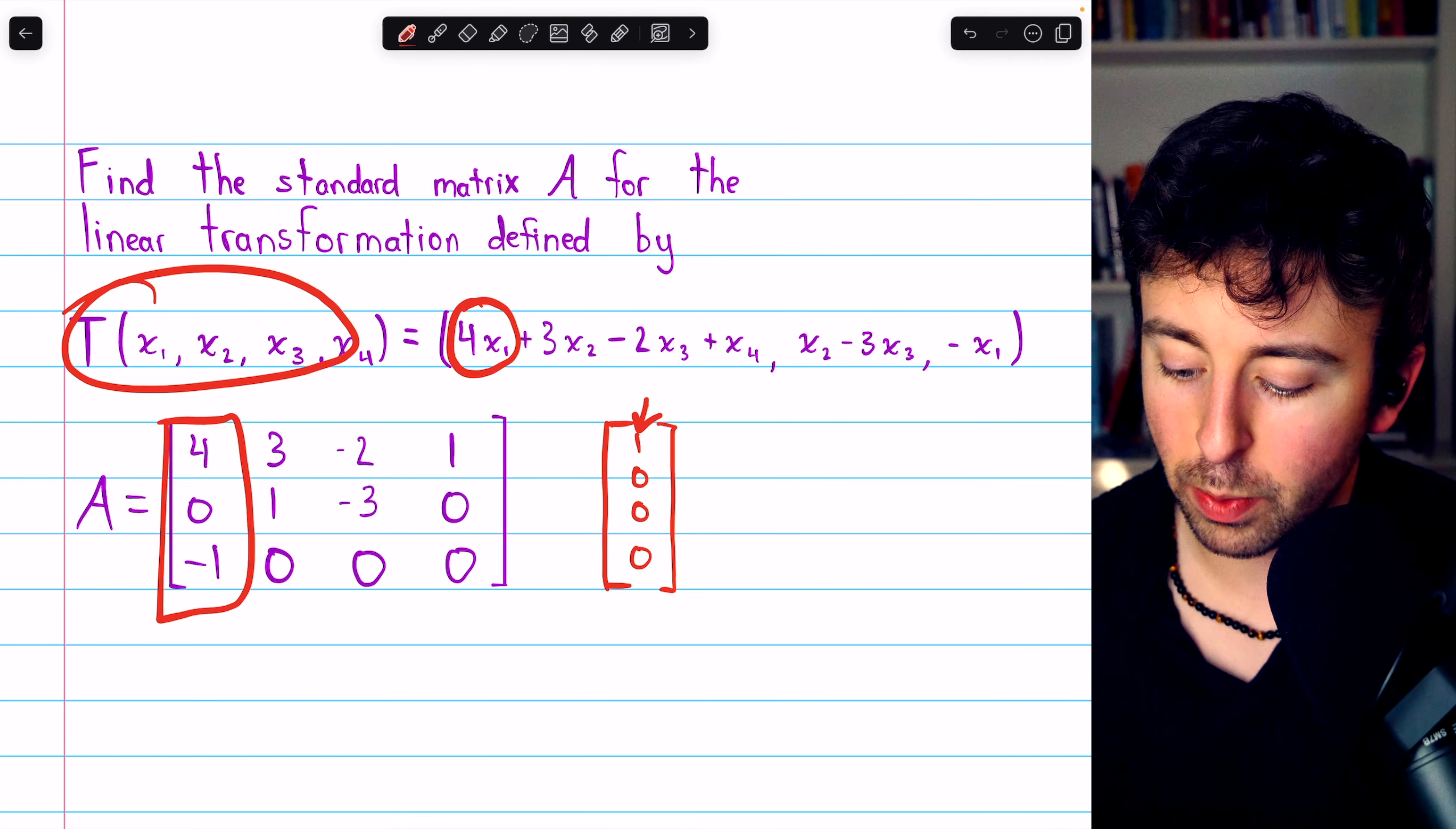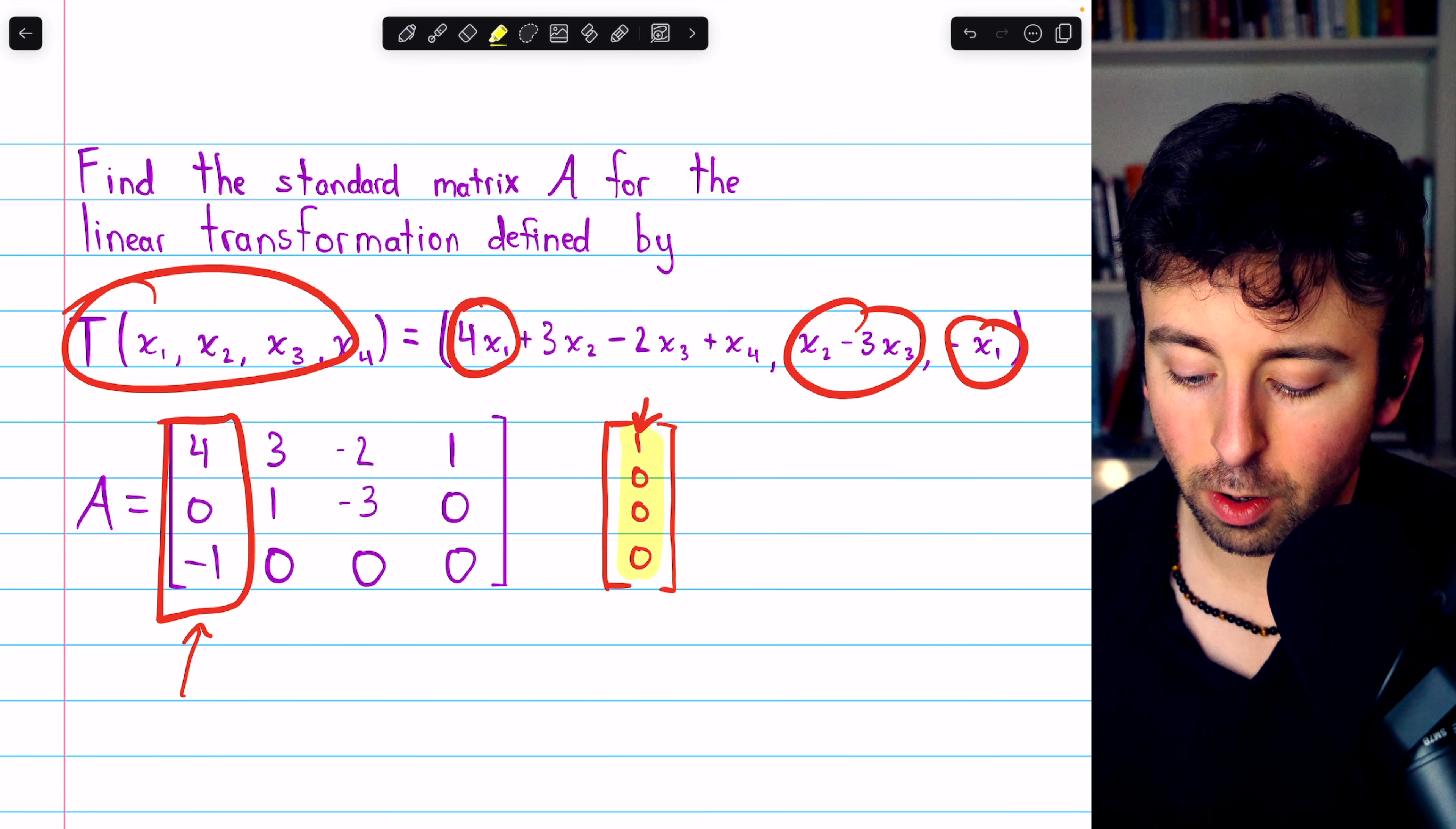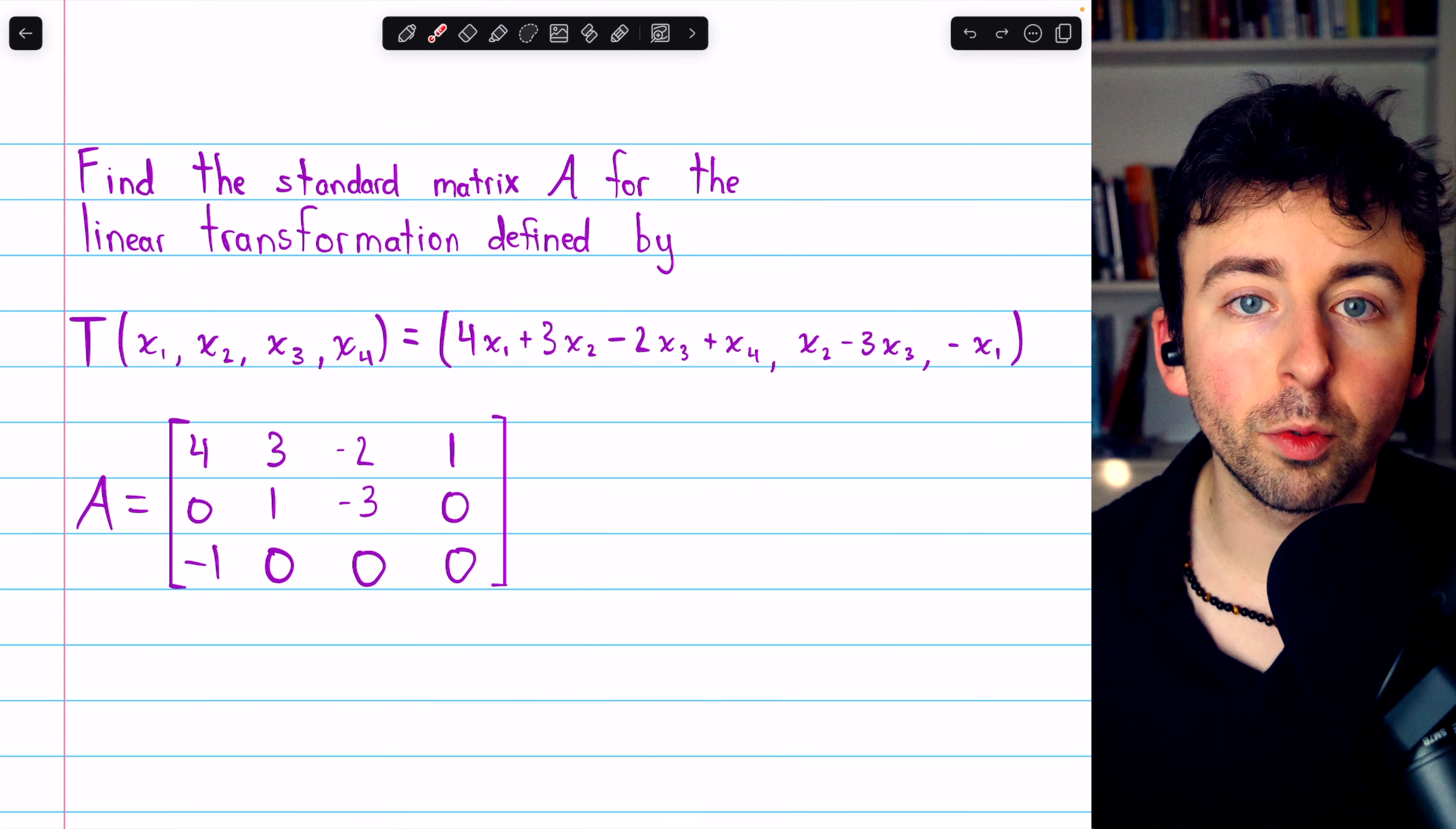Because you would have 4 times 1, then in the next row we would have nothing times 1, and then we'd have negative 1 times 1. So it would produce this column. This standard basis vector gets mapped to this vector under this transformation. Alright, let's use this quick strategy to solve one more.